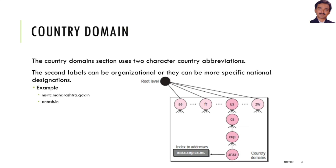The Country Domain uses a two-character country code. The second label can be an organization name or can be a more specific national designation. For example, maharastra.gov.in, antosh.in.